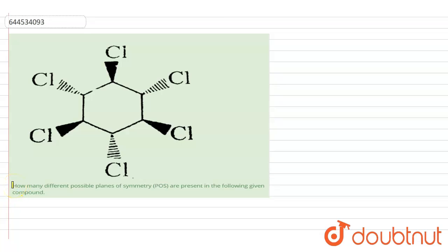Hello everyone. The question given here is: we are given a compound structure and asked how many different possible planes of symmetry, also known as POS, are present in the following given compound.